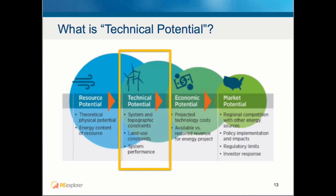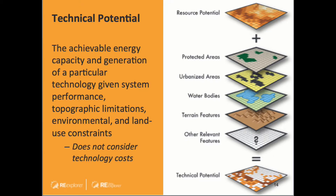Now that we've discussed resource potential, let's take a closer look at technical potential. Technical potential is the achievable energy capacity and generation of a particular technology given system performance, topographic limitations, and environmental and land use constraints. The image on the right shows example data sets that can be combined to focus on a particular area with the greatest likelihood of development. It is important to note that technical potential does not consider technology costs; those are used in economic and market potential analysis.